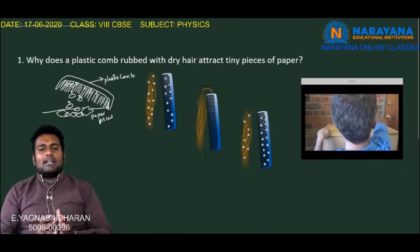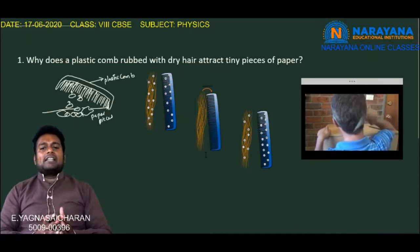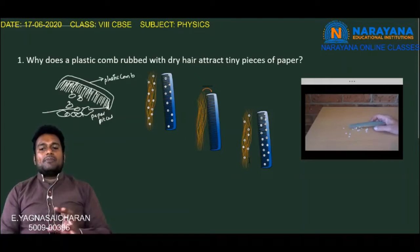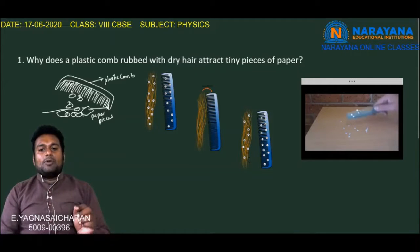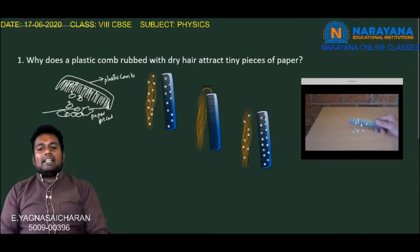So when the comb is rubbed on dry hair, electrification of the comb takes place. After electrification, when we bring it near pieces of paper, all the pieces of paper get attracted. Every paper behaves like a dipole, and this continues until the complete charge on the comb is fully discharged.